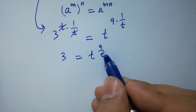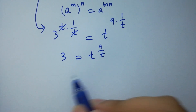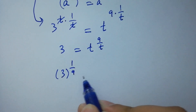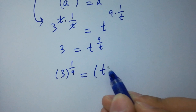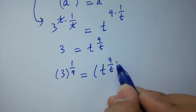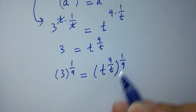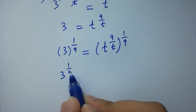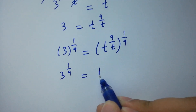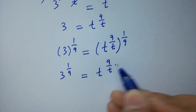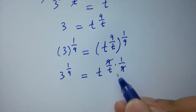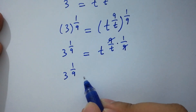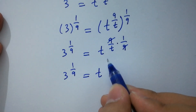To cancel the 9, take power 1 over 9 on both sides. So 3 to the power 1 over 9 equals t to the power 9 over t, to the whole power 1 over 9. This gives 3 to the power 1 over 9 equals t to the power 9 over t times 1 over 9. The 9s cancel, and we have 3 to the power 1 over 9 equals t to the power 1 over t.